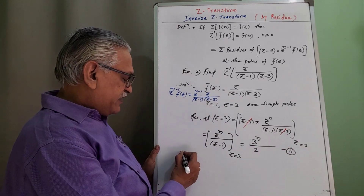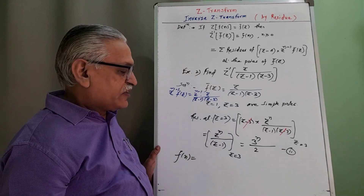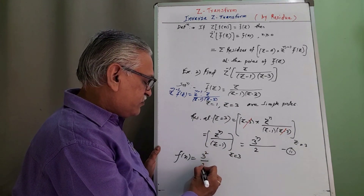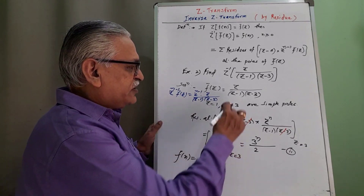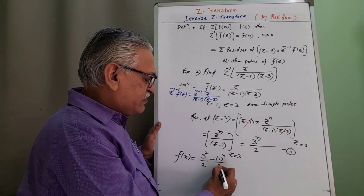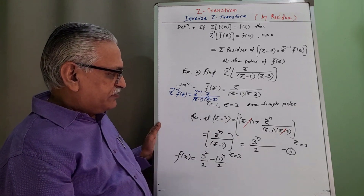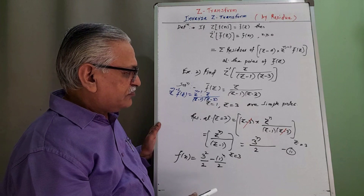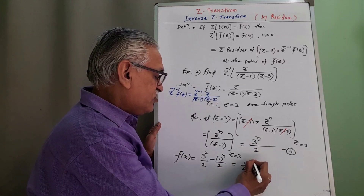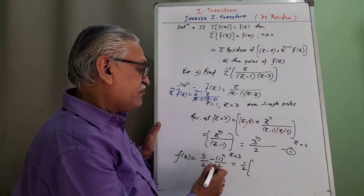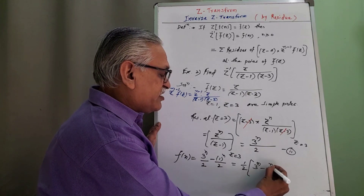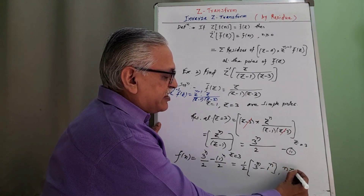The inverse Z transform F(N) is the sum of the residues. Therefore F(N) = 3^N/2 − 1^N/2. Taking 1/2 as common, we get F(N) = (1/2)(3^N − 1^N), with the condition N ≥ 0. The inverse Z transform is obtained by applying the first formula, as both poles are simple poles.